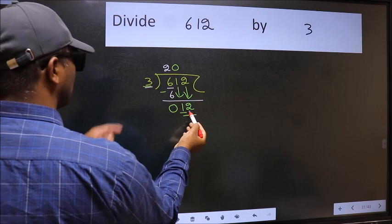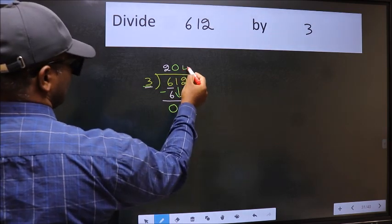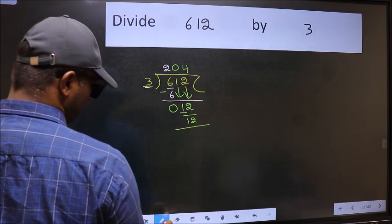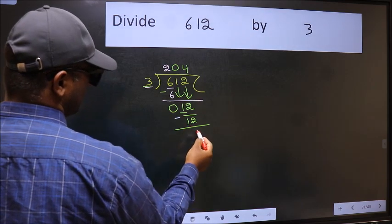Now 12. When do we get 12 in 3 table? 3 fourths, 12. Now we should subtract. We get 0.